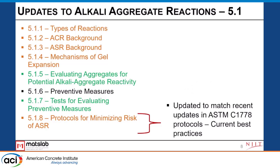Finally, the last section — protocols for minimizing risk of ASR — was a brand new section in 2016. If you're familiar with ASTM C1778, it's along those same lines. We really deferred to C1778 since we know that's where the majority of the work and updates are coming more regularly. To be honest, it's the same people in the room for both 201 and C1778. So we gave a summary of C1778, made sure it was up to date, but the gold standard is to actually go to that ASTM document.